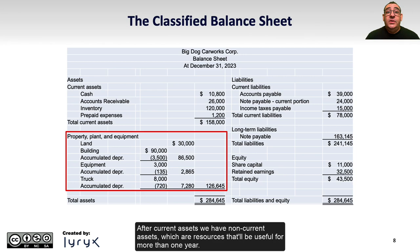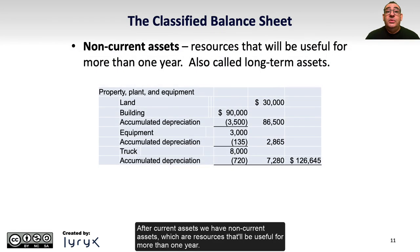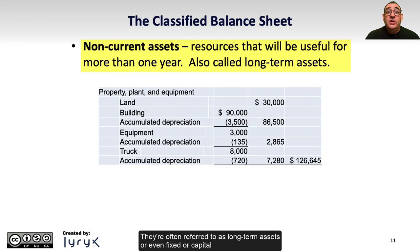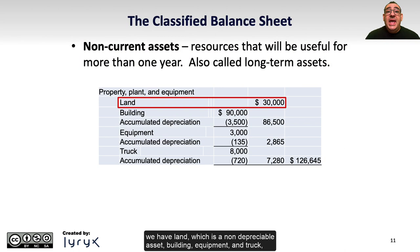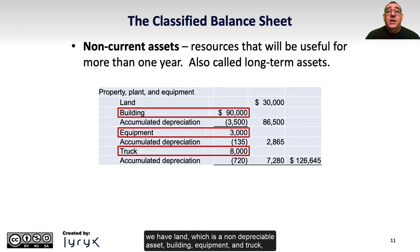After current assets, we have non-current assets, which are resources that will be useful for more than one year. They are often referred to as long-term assets or even fixed or capital assets, though those terms aren't used that much anymore. Comprising part of property, plant and equipment — often referred to as PPE — we have land, which is a non-depreciable asset, building, equipment, and truck.